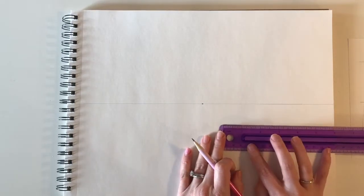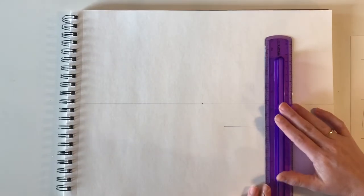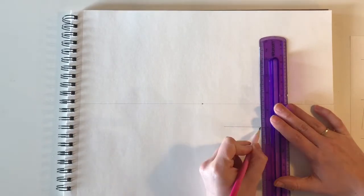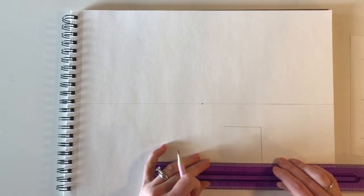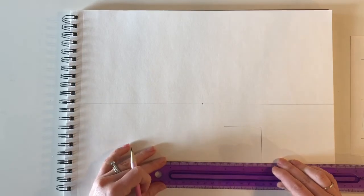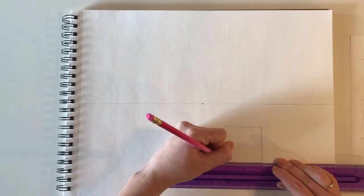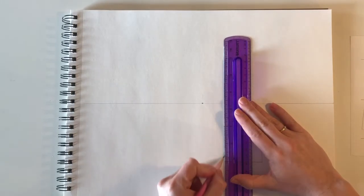Step number one to draw a cube: I'm going to start with a two-inch front face square, two inches by two inches, making sure what should be a true horizontal is a true horizontal and what should be a true vertical is a true vertical. That is step one - drawing the front face of our cube.